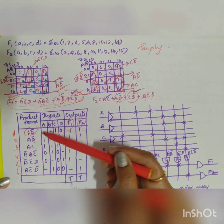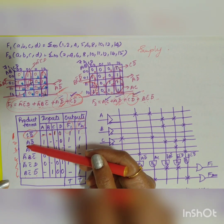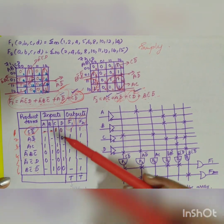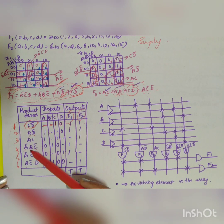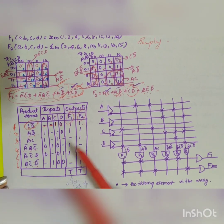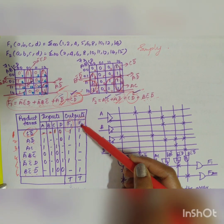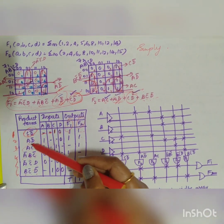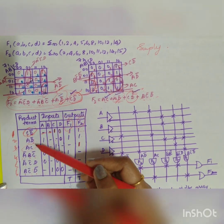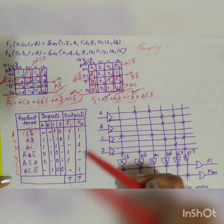For CD̄: C=1, D=0, A and B are not used (dash). For AD̄: A=1, D=0, B and C are not used. For AC: A=1, C=1, others not used. For ĀBC̄: A=0, B=1, C=0. For ĀC̄D: A=0, C=0, D=1, B not used. For the output columns F1 and F2: CD̄ and AD̄ appear in both F1 and F2, so both are marked one. AC appears only in F2, and ĀBC̄ appears only in F1. The table uses active high output notation.